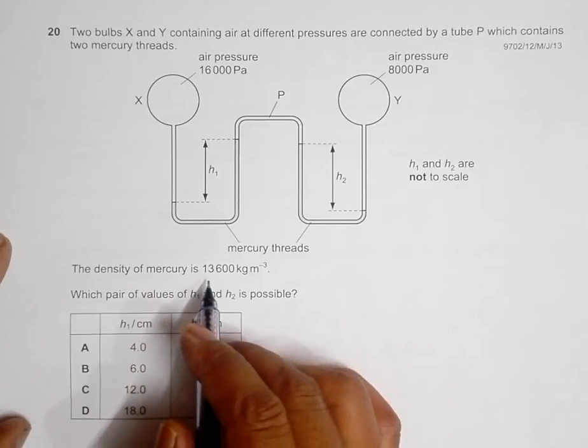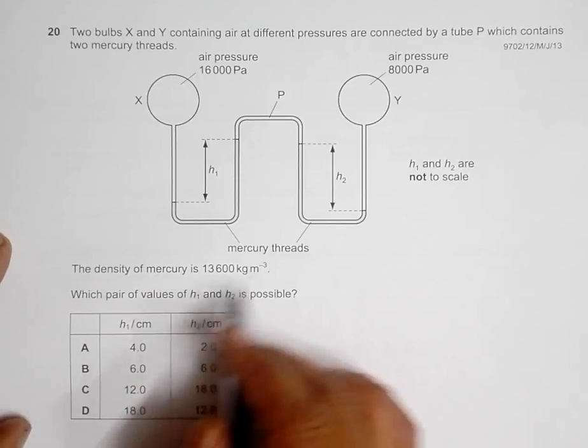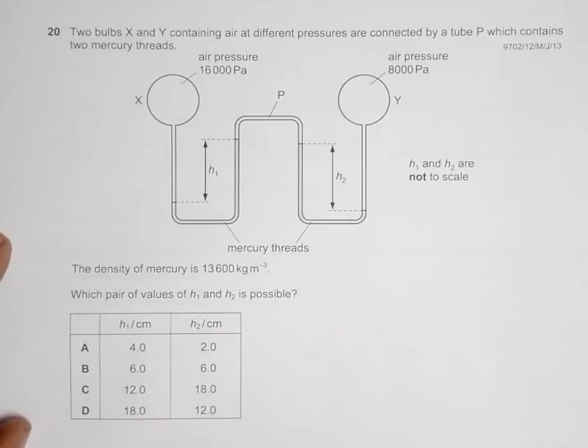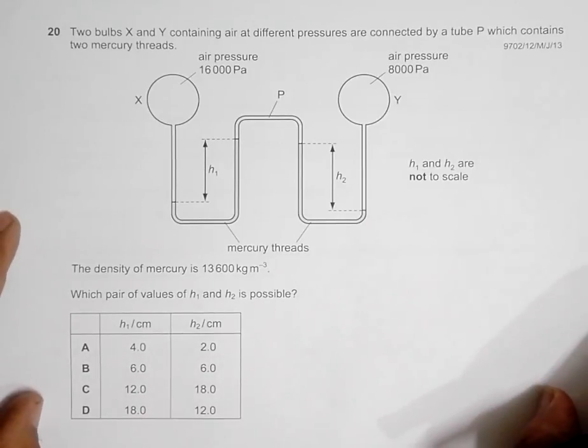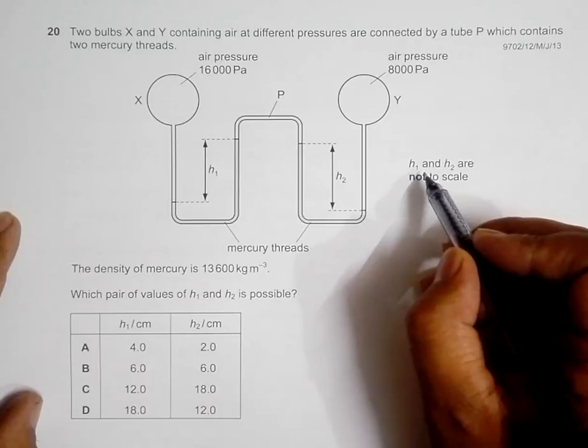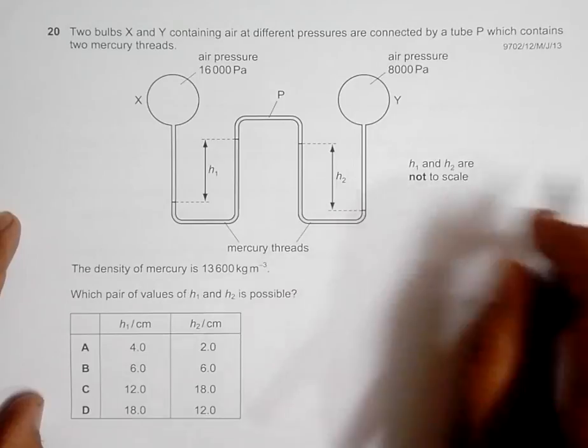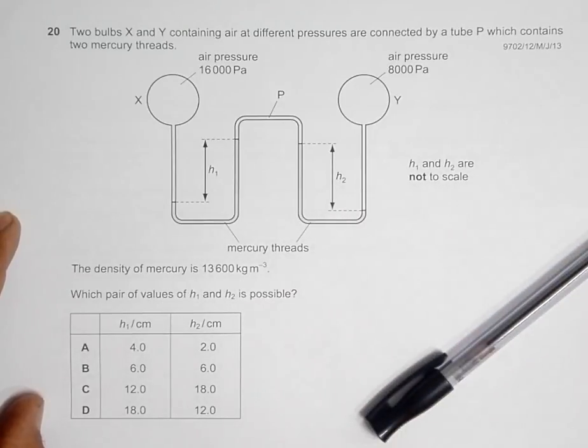The density of mercury is 13,600 kg per meter cubed. Which pair of values of h1 and h2 are possible? It's given that h1 and h2 are not to scale, so their magnitudes here do not show their actual values - their values could be different.